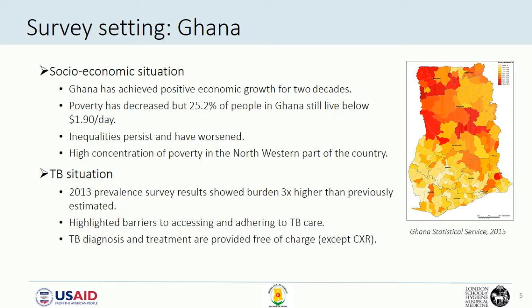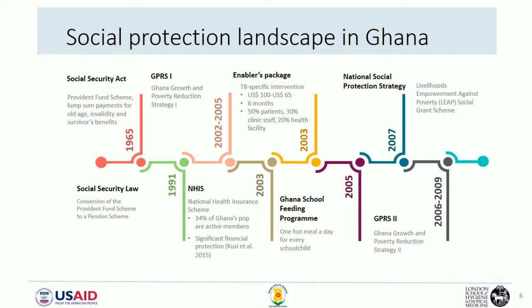In Ghana, TB care is meant to be free for all, with the exception of chest radiography at about $8 per chest. Ghana is a lower-middle-income country with a reasonably well-developed social protection floor. The National Health Insurance Scheme covers about a third of the Ghanaian population, but only people enrolled in the formal sector of the economy.